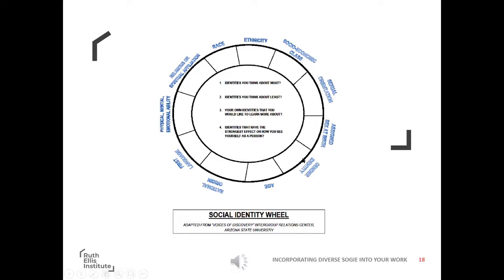We often feel more comfortable around folks who have shared identities — that is natural and normal for humans. Take a minute to think about the words you use to name your own identities. Race is a social construct relating more to our physical differences; we use words like Black, white, Asian, Latino, Latinx. Ethnicity is more specific — it relates to shared cultural beliefs, language, and heritage. You might be white but German-American, or Black but Cuban or from Ghana.